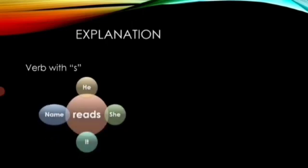To form the simple present tense, for he, she, it, or any name of a person or a thing, we add 's' to the original form of the verb. For example: he reads, she reads, it reads. Or a name like Ali reads. He, she, and it love 's'.